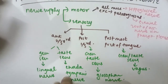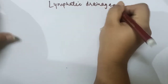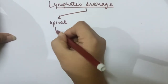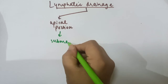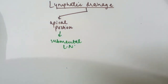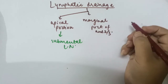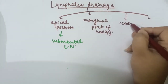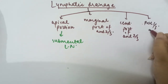Lymphatic drainage occurs from various parts of the tongue. The apical portion of the tongue drains into the submental lymph nodes. There is also the marginal portion of the anterior two-third, the central portion of the anterior two-third, and the posterior one-third along with the root of the tongue.